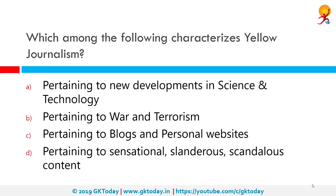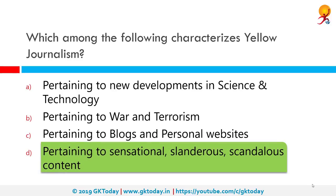Which among the following characterizes yellow journalism? The correct answer is pertaining to sensational, slanderous, and scandalous content. Yellow journalism, or the yellow press, is a type of journalism that does not report much real news with facts. It uses shocking headlines to sell more newspapers and may include exaggerating facts or spreading rumors.